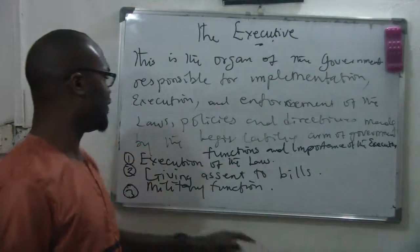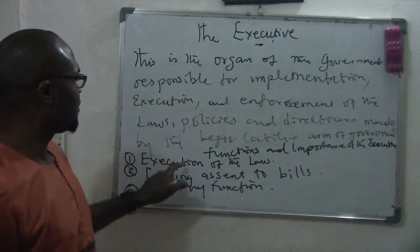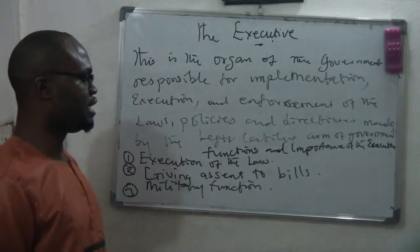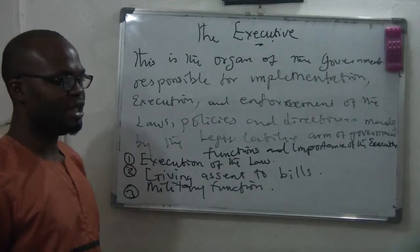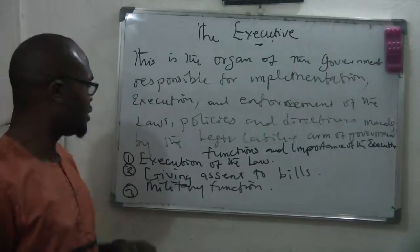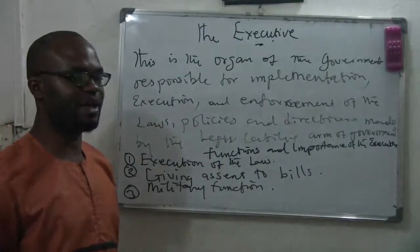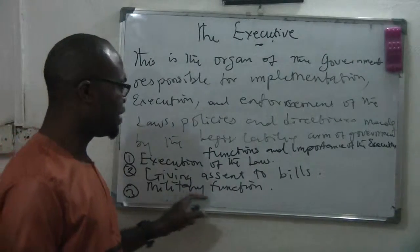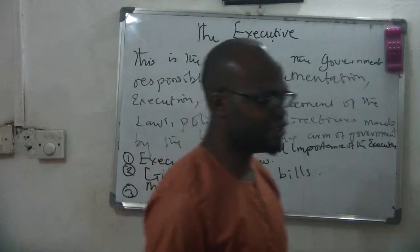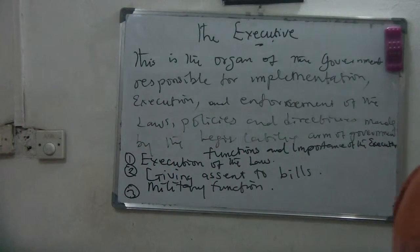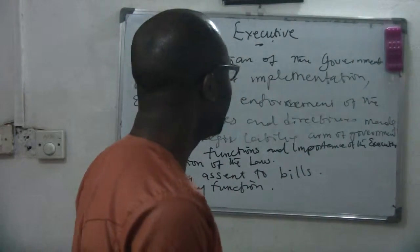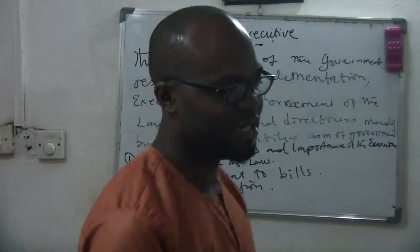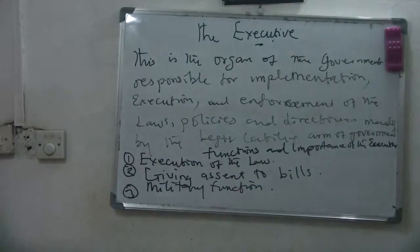Functions and importance of the executive: Number one — execution of law; they make sure that the laws passed by the legislature are executed. Number two — giving assent to bills by signing them. Number three — performing military functions. Thank you.